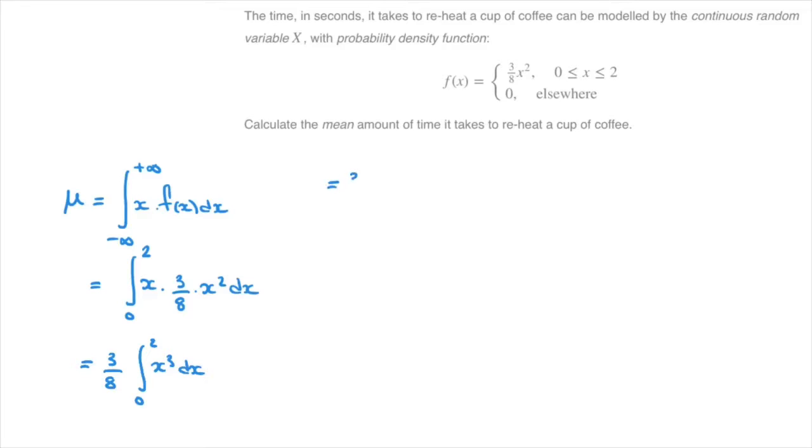That's equal to three over eight times in square brackets, x to the power of four over four with lower limit zero and upper limit two. And to make life easier, I like to take this factor of a quarter outside of these square brackets.